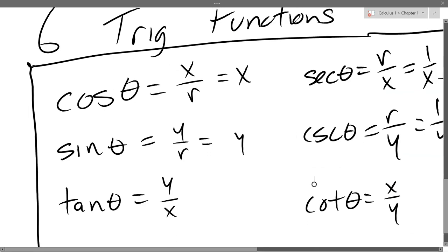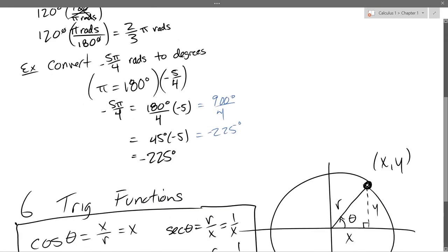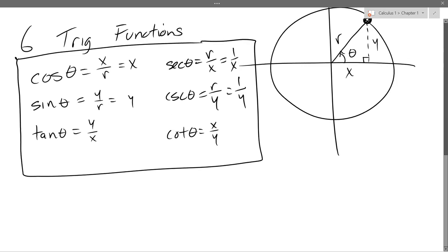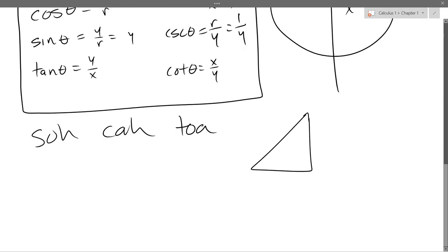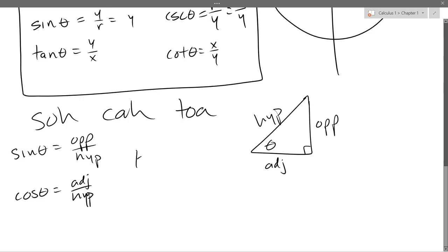So we're back to trig. We stopped after just the definition — we've done almost no trig. We did angles. Six trig functions. There's also SOHCAHTOA. Theta, right angle, opposite, adjacent, hypotenuse. Sine theta is opposite over hypotenuse. Cosine theta is adjacent over hypotenuse. And tangent is opposite over adjacent.